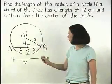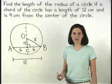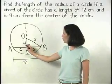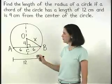Notice that right triangle OCB is formed so we can use the Pythagorean theorem to set up the equation 4 squared plus 6 squared equals X squared.